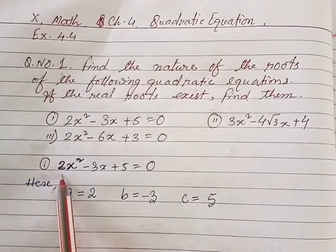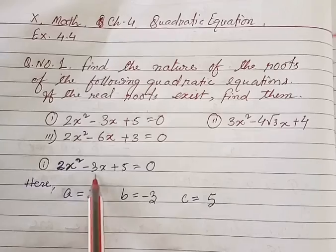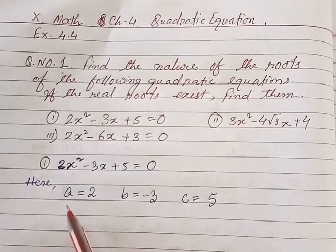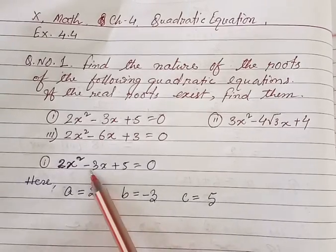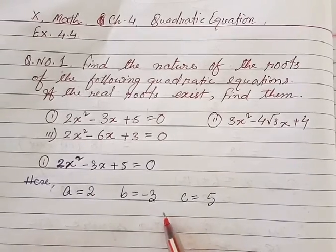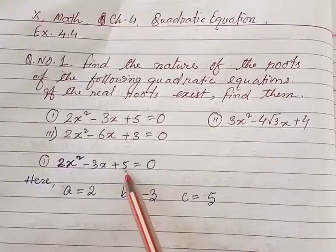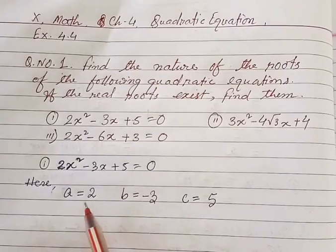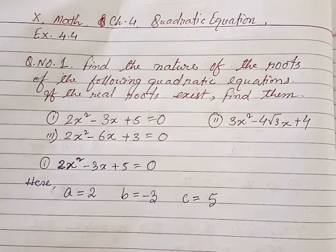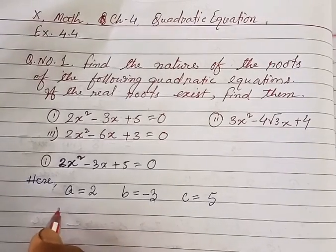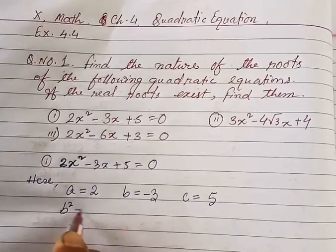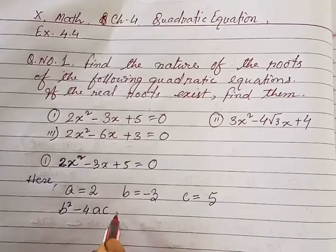Equation 1 is 2x² - 3x + 5 = 0. Here a = 2, b = -3, c = 5, since it is in the form ax² + bx + c = 0. Now let us find the discriminant of this equation, that means the value of b² - 4ac.